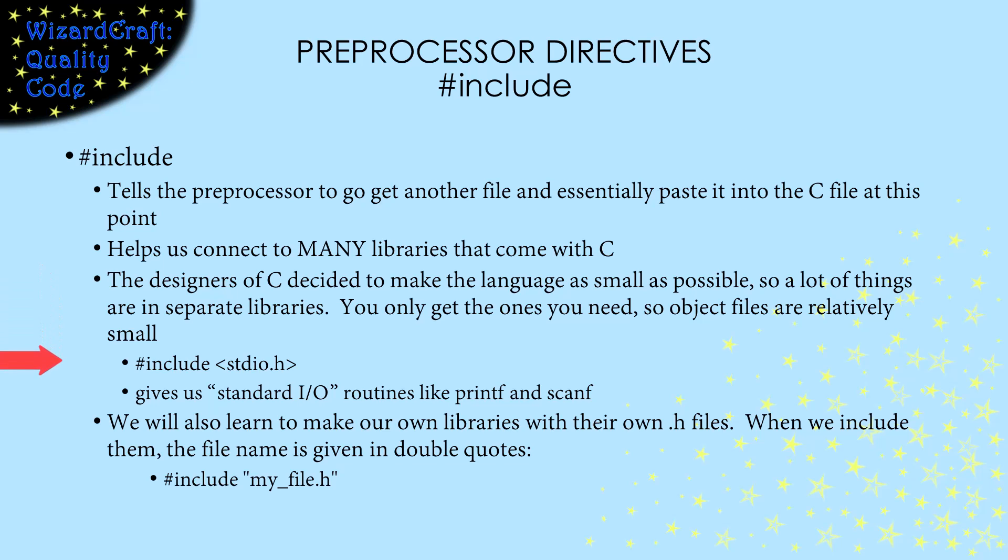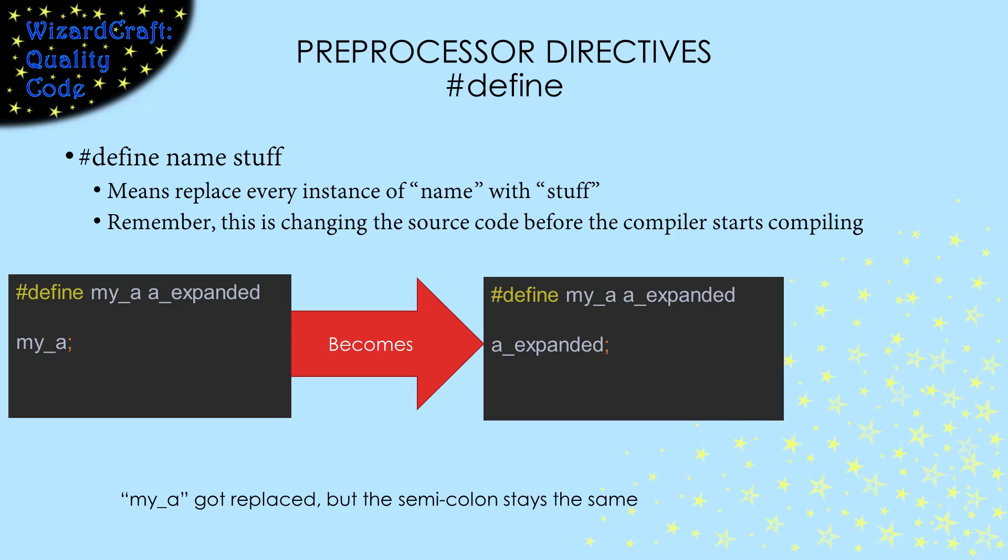We'll see a lot of these, but the most commonly used one is standardio.h, which gives us functions like printf and scanf. In another video, I'll talk about putting our code in multiple C files and how they get put together to make a single executable. When we do that, we'll be using pound include to include our own .h files. In that case, the file name is surrounded by quotes instead of triangle brackets.